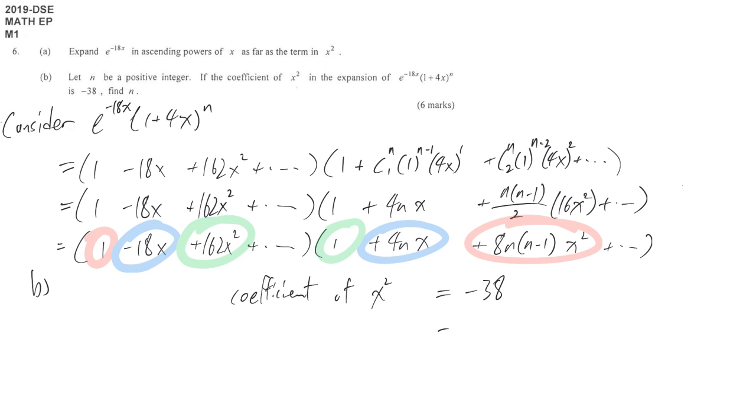Therefore we can write the conclusion. 1 needs to times this term. We don't need to write down x squared here because we talk about coefficient, just the number part. So 1 times 8n times (n-1), and then negative 18 we need to times the number here, 4n. Positive 162 we need to times the constant, that means positive 1 here, is equal to negative 38. We get the equation with n being the only unknown. Then the rest we just need to handle this quadratic equation.